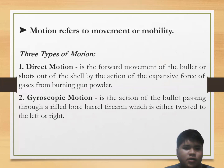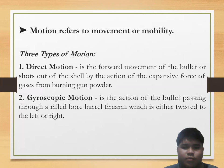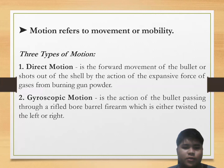Motion refers to movement or mobility. In ballistics, there are three types of motion: direct motion, gyroscopic motion, and translational motion. Direct motion is the forward movement of the bullet or shots out of the shell by the action of the expansive force of gases from burning gunpowder. Direct motion is usually observed from a non-rifled bore or barrel, such as a revolver and a shotgun.